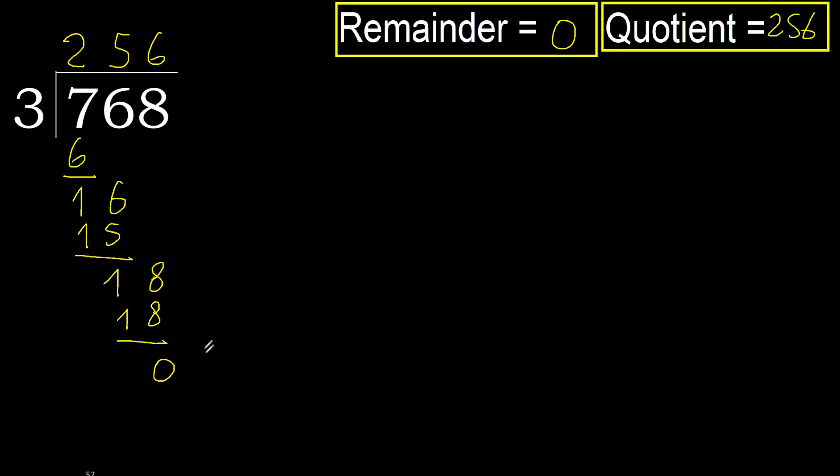The remainder is 0. Therefore, 768 divided by 3 is 256.